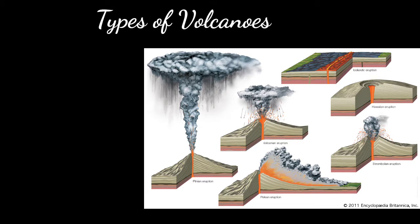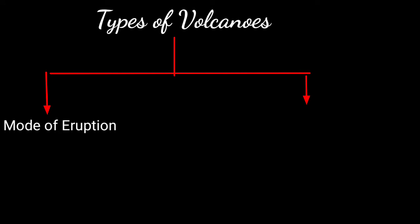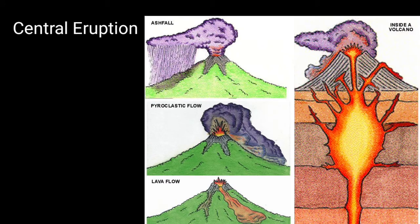Volcanoes are classified on the basis of mode of eruption and period of eruption. On the basis of mode of eruption, there are two types: central eruption and fissure eruption. In central eruption, magma comes out through a small opening. Due to tremendous pressure and accumulated gases beneath, magma fragments and material are thrown out with great force. Therefore, central type of eruption is also termed explosive type of eruption.